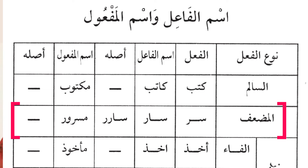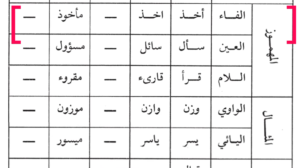The third type of verb is al-mahmuz. Al-mahmuz refers to verbs which have one of their three letters carrying a hamza. These are further categorized into three. The first category is al-mahmuz al-fa' — the one whose first letter is hamza. An example is the word 'akhadha', which means 'he took'. The taker will be called 'akhidhun'.